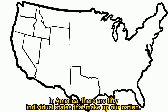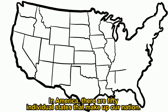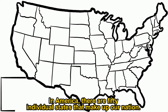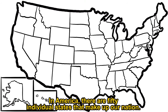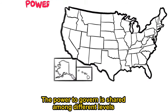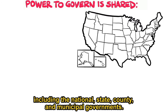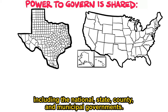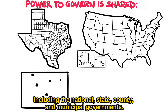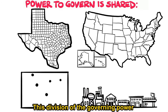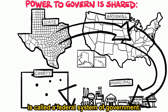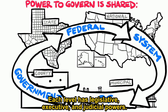In America, there are 50 individual states that make up our nation. The power to govern is shared among different levels, including the national, state, county, and municipal governments. This division of the governing power is called a federal system of government.